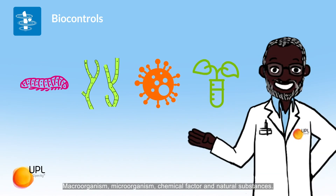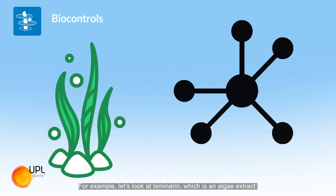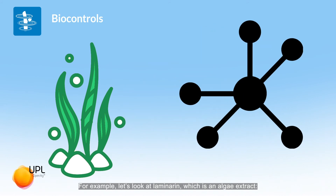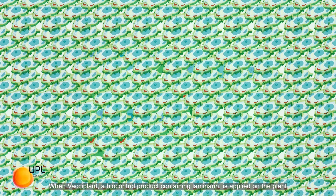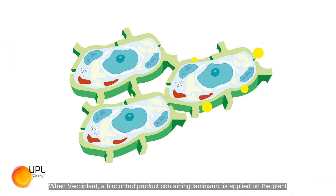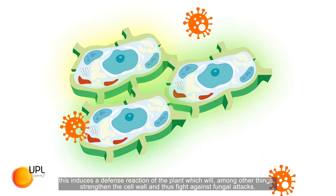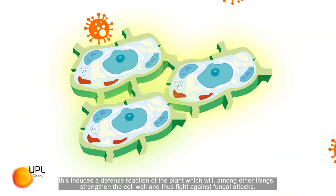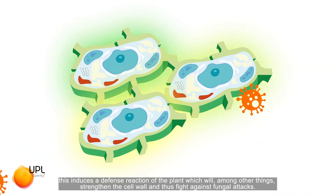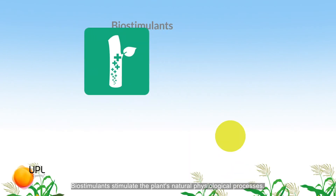According to their origin, we can divide biocontrols into four large families: macro-organisms, micro-organisms, chemical factors, and natural substances. For example, let's look at laminarin, which is an algae extract. When Vaxi Plant, a biocontrol product containing laminarin, is applied on the plant, this induces a defense reaction of the plant which will, among other things, strengthen the cell wall and fight against fungal attacks.